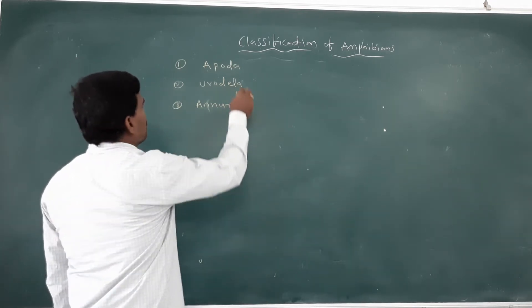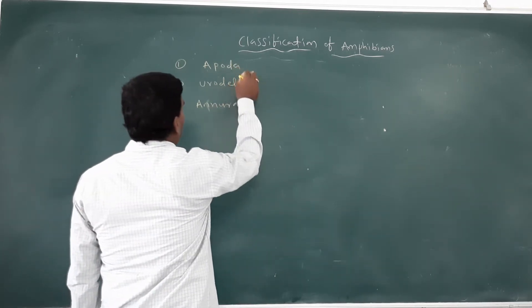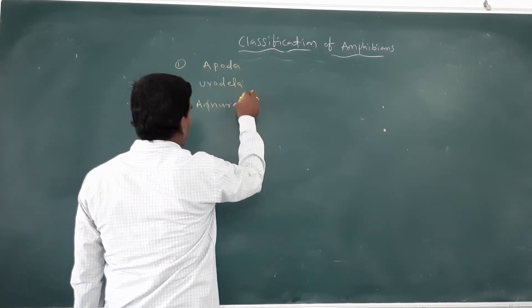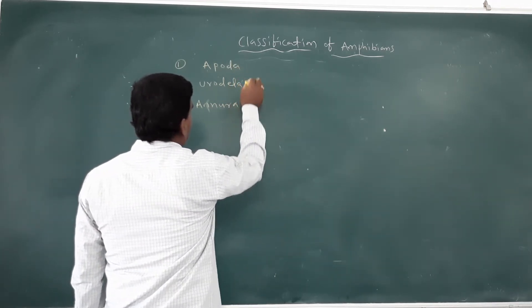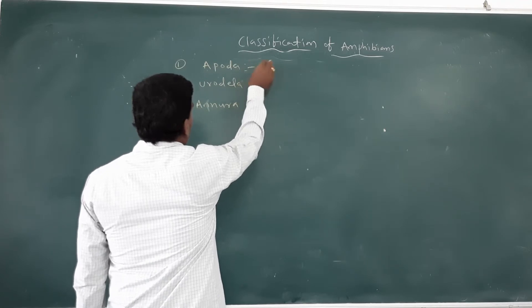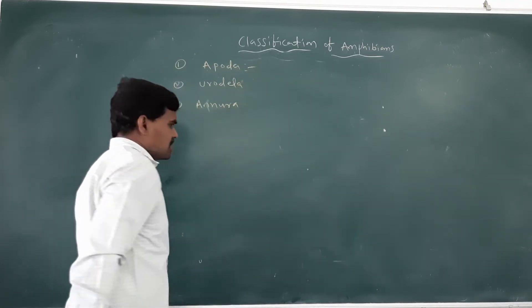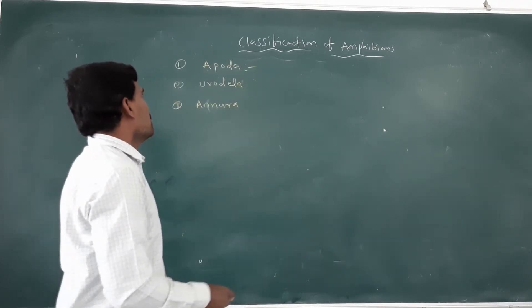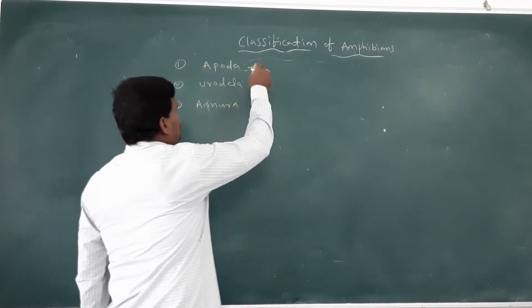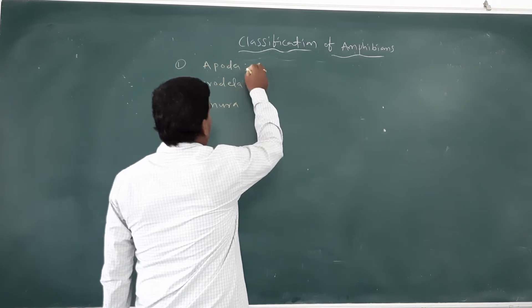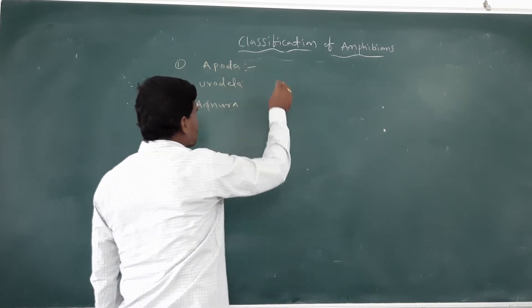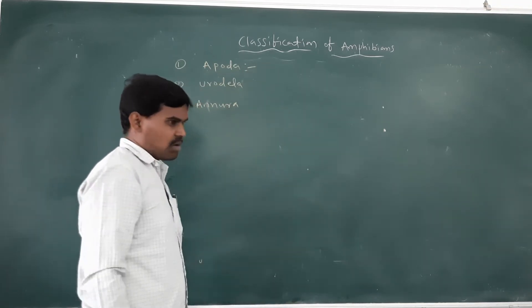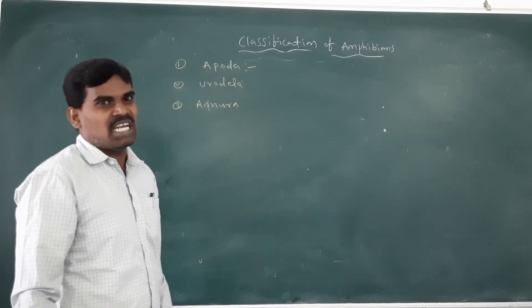The three classes are: Apoda, Urodela, and Anura. First class, the Apoda. This class of Amphibians is commonly called as Blind Worms or the Caecilians.